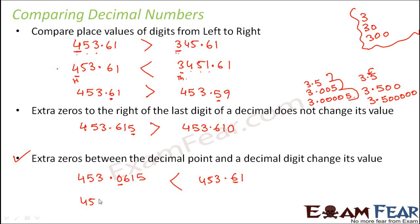Let us look at another example: 453.6015 and 453.61, which is greater? So here, even after the decimal point, the first decimal digit is also the same. Now the next digit here is zero and the next digit here is one. Now after that you do not have anything, but here you still have 15. Now even though you have more number of digits, that doesn't matter.